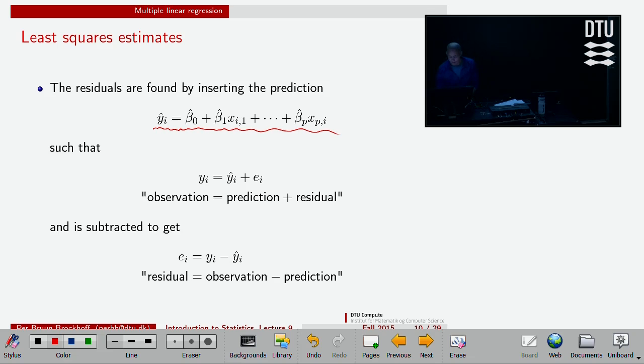So the terminology and the notation is the same in the sense that we have the observation, we can predict it by the model and we have a residual. And the names are all the same as last time: y_i, y_hat_i, residual. It goes the same, exactly the same way. And of course the residual is the difference between the observed values and the modeled or the predicted values.